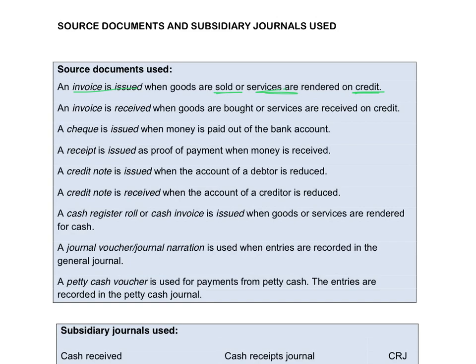An invoice received — you receive the invoice from the place where you buy the goods. So invoice received will be for goods purchased on credit or services received from someone else on credit.